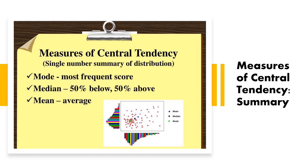Here is a summary table for the measures of central tendency. There are three measures: mean, median, and mode. Mode is the most frequent score, median is the middle number, and mean is the average of the data.